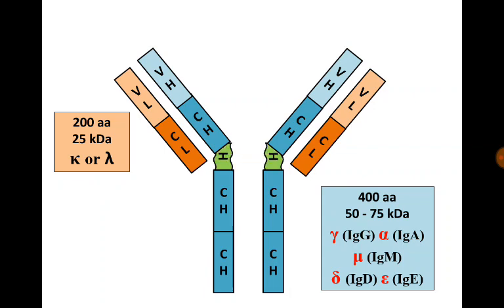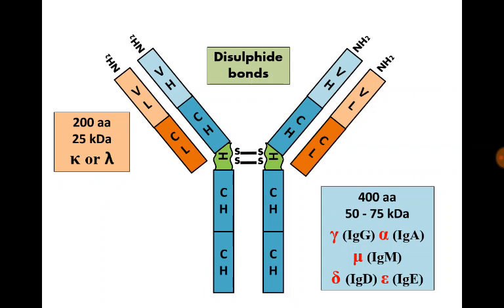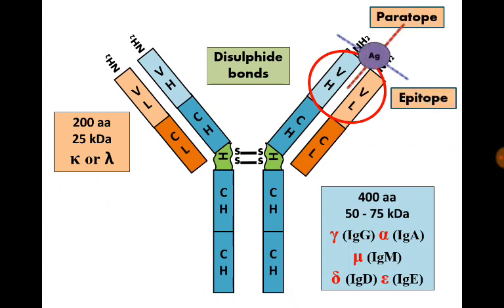This green portion is called the hinge region where the two heavy chains are attached to each other by disulfide bonds. The NH2 terminal part, which is formed of the variable portions of both the light and the heavy chains, is called the paratope, and it is the site of attachment to the epitope of an antigen. Each immunoglobulin has two paratopes and can attach to two epitopes, but of course identical epitopes. The carboxyl terminals differ among different classes of immunoglobulins and they determine the functions of them.